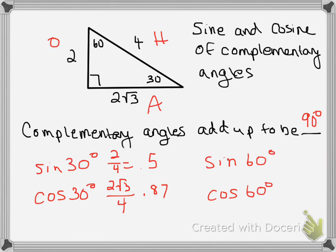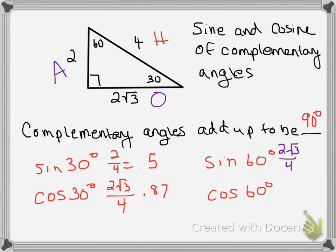Now let's look at sine of 60°. We have to completely rename our sides — the hypotenuse stays the same, but when we change our reference angle to 60°, the opposite and adjacent switch. Sine of 60° is opposite over hypotenuse, which is 2√3 over 4 — that comes out to 0.87. Then cosine of 60° is adjacent over hypotenuse, which is 2 over 4, giving us 0.5.